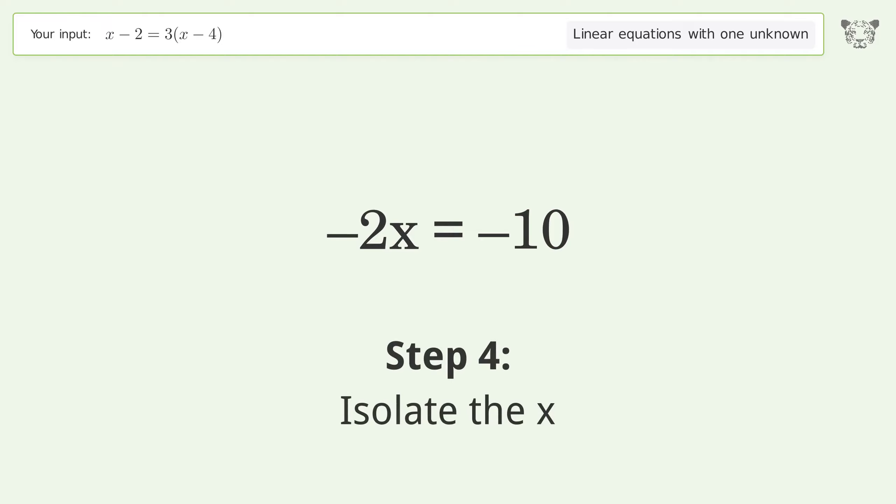Isolate the x. Divide both sides by negative 2 and cancel out the negatives.